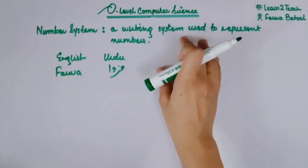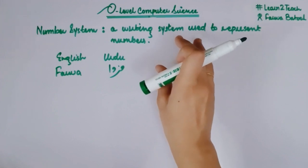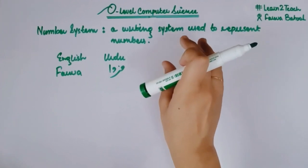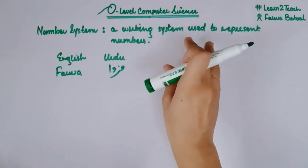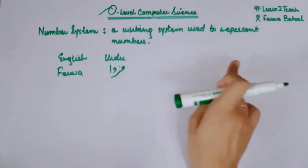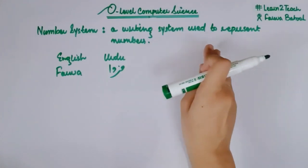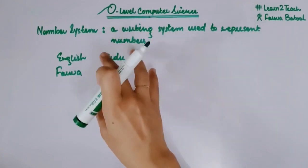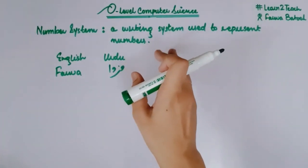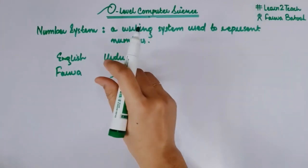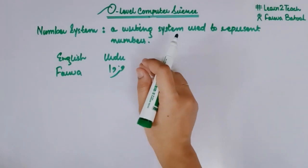Similarly, in number systems, there is some particular rule and particular alphabet or particular digits that are needed to be followed in order to represent the number in that particular number system. So let me tell you the types of number systems and we are going to see this example. How we are going to represent numbers in each number system. So moving into the type of number systems.